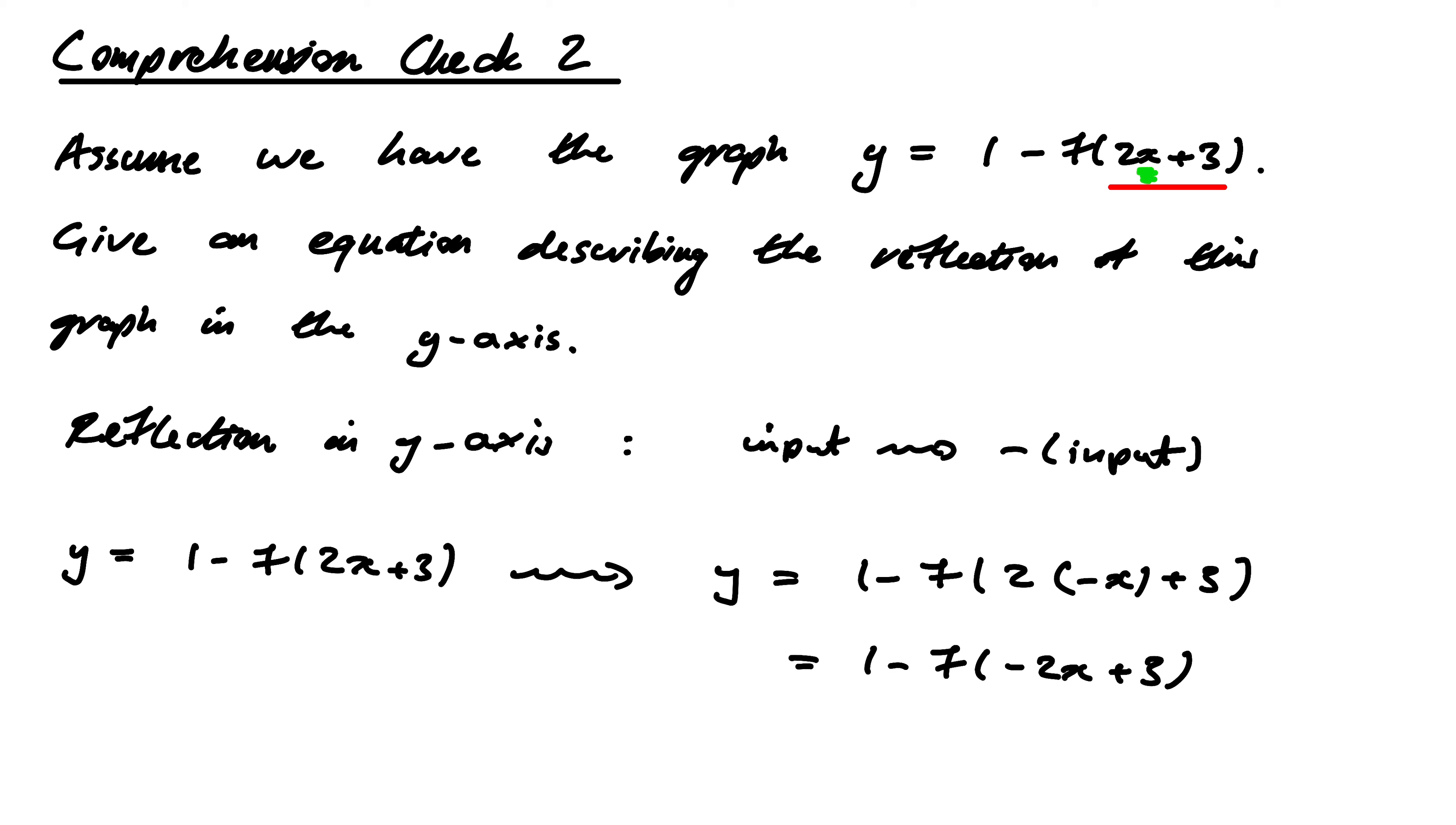So again, as a warning, this is absolutely not equal to 1 - f(-(2x - 3)). That's totally wrong. That's altering the input into f—f is not the function anymore. The function is this. The x is the input, so it's what gets changed to -x.